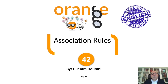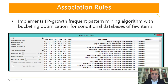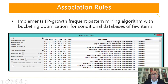Hello, this is Hussam Horani and today we will talk about association rules. Association rules implements FP-growth frequent pattern mining algorithm with bucketing optimization for conditional databases of a few items.